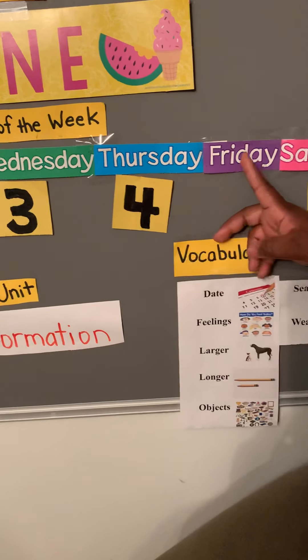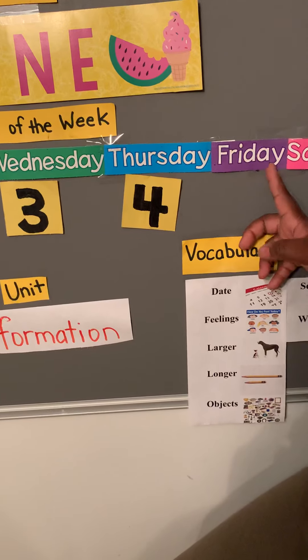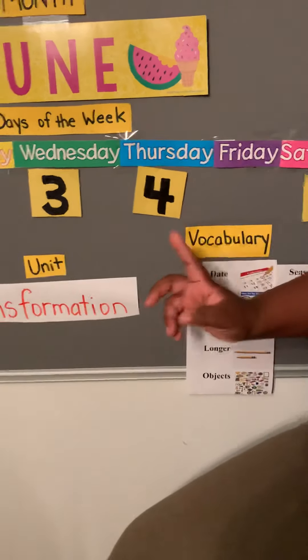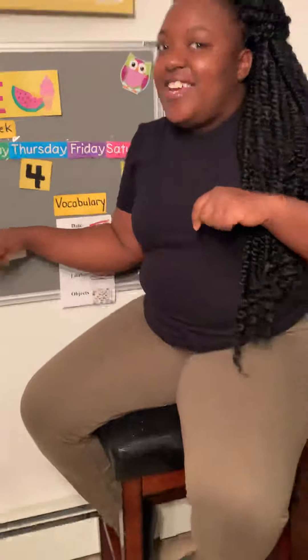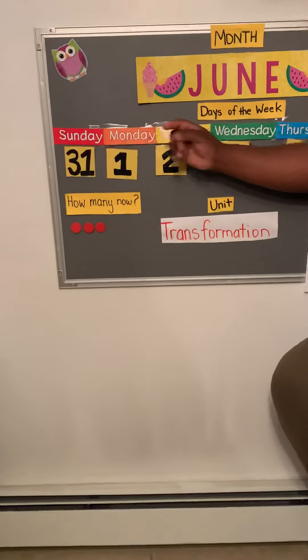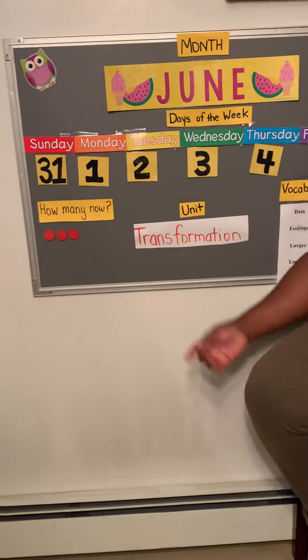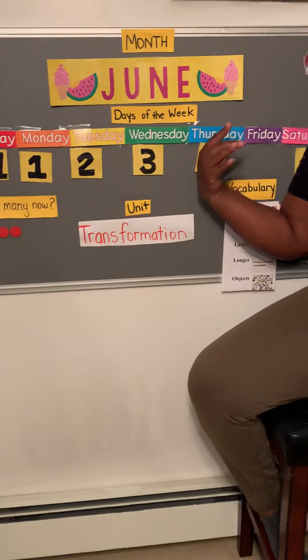If yesterday was Thursday the fourth, what is today? Today is Friday! What do we do on Fridays? A Friday dance — do a Friday dance! And why do we get happy on Fridays? Because tomorrow is Saturday and Sunday, and they are the weekends. We don't do school work on the weekends — we are off on the weekends.